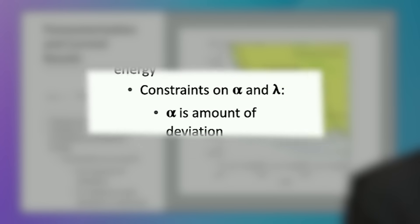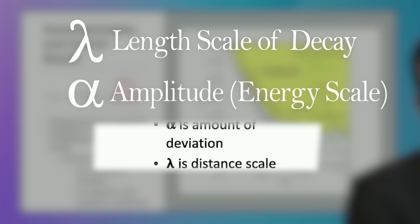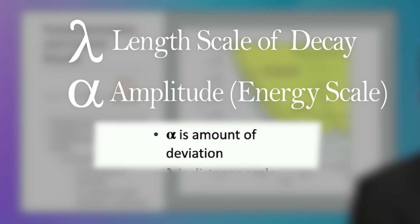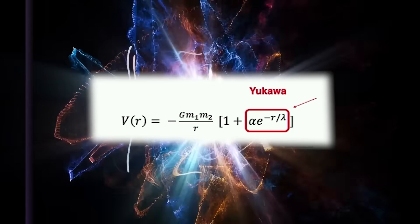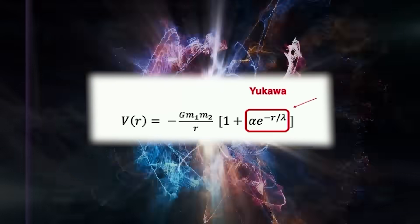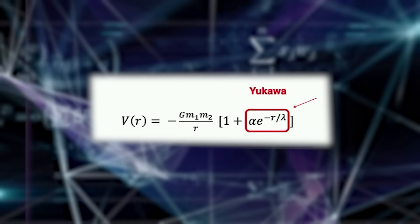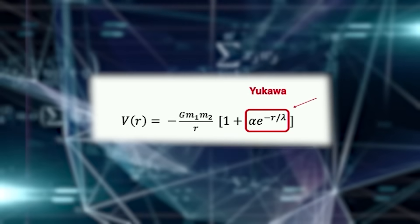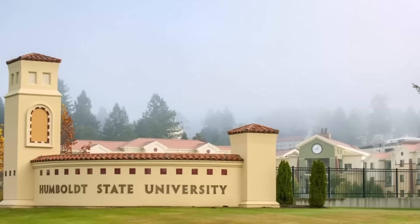which is parametrized by two numbers—the length scale over which it decays, which is lambda, and some amplitude which is an energy scale, which is alpha—you have this two-dimensional parameter space of alpha and lambda. The amount of the deviation in potential, alpha, is plotted here as a function of the inverse of the length scale.